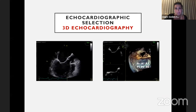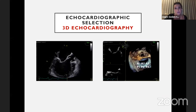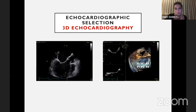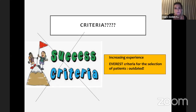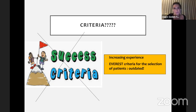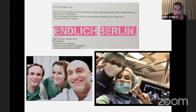Echocardiographic selection is very important, and 3D echocardiography plays a crucial role before and during the procedure. At the beginning we used the Everest criteria for patient selection, but nowadays we know that it's outdated — it's all about increased experience, as many centers now have large numbers of patients and are trying different patient types. So I cannot say there are strict rules, but of course there are some patients who are really not good candidates.